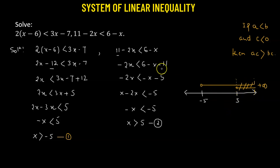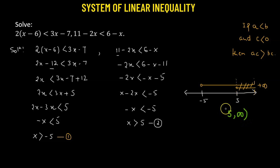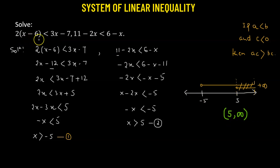Writing it in interval form, we have 5 to infinity. Infinity by definition is unbounded, so we use an open interval. Since 5 is not part of the solution, we also use an open interval there. So the solution set to the given system of linear inequalities is the open interval from 5 to infinity.